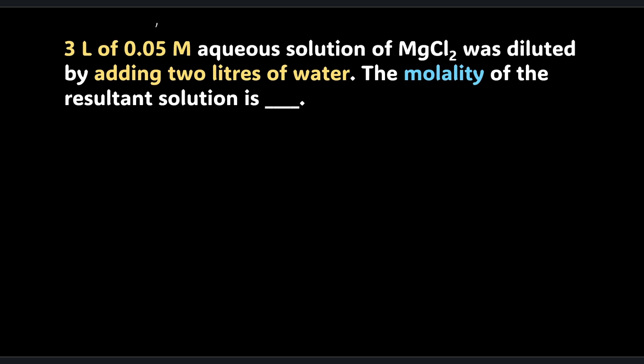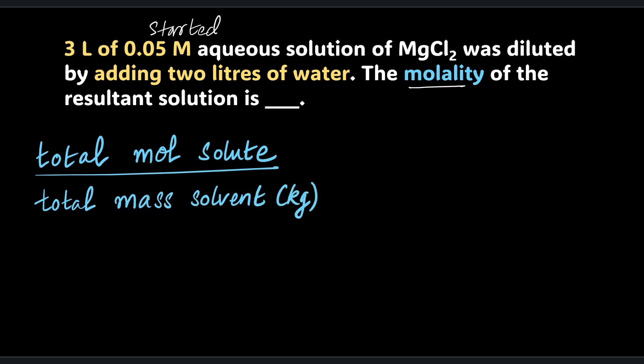So the amount of stuff that you started off with and what you have in the end, that's all in yellow. Blue is what we need to find. How do we do this? Let's do it from first principle. Write down the formula for molality. The stuff given to us is in yellow. Molality is defined as total moles of solute divided by total mass of solvent in kilograms.